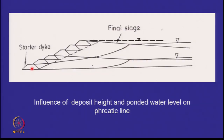In staged embankments — starter dike, first raising, second raising — if operating with a low pond, the phreatic line is far away. After six stages of raising, you are still far away, but pore pressures are increasing as the water level becomes higher. However, most dams are operated where the water level reaches half a meter from the crest. When the high pond level occurs, the phreatic line forms inside the embankment and that becomes the critical stability issue. A 20-meter high dam with water very close to the top and a high phreatic line can give you a wet toe. Height of the deposit and ponded water level are the two critical conditions.